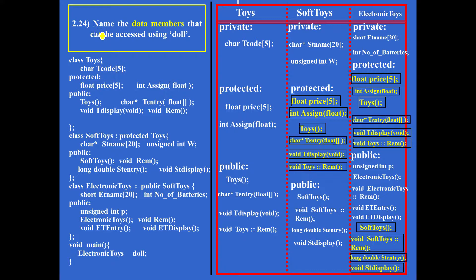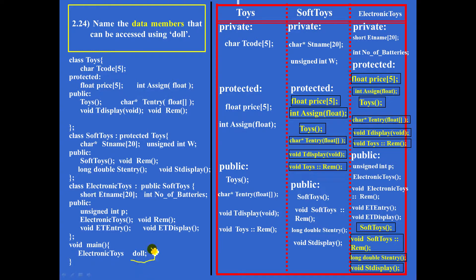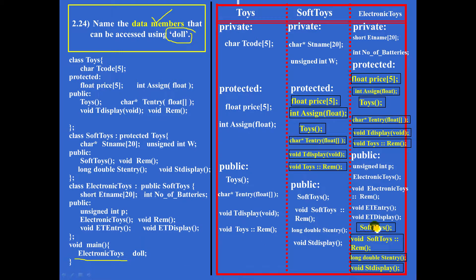Question 2.24: Name the data members that can be accessed using doll. Doll is an object of class electronic toys. Using an object means answers come from the public area. So variables from the public area of class electronic toys: there is only one variable, unsigned int DP, because all remaining members in the public area are functions. The correct answer is unsigned int DP.